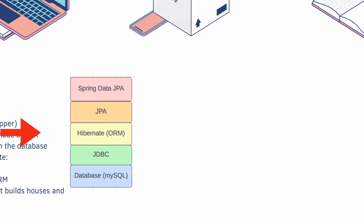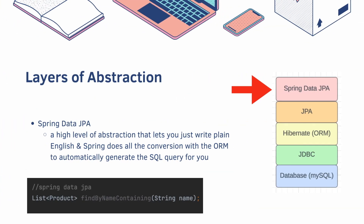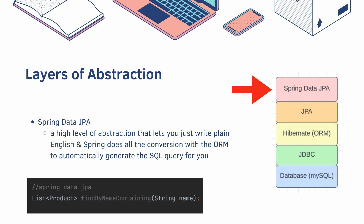At the top we have Spring Data JPA, which we covered in the previous video. This is a high level of abstraction that lets you write plain English, and then Spring does all of the conversion with the ORM to automatically generate the SQL query for you. You don't have to be an expert on this stack, but you should know the terminology used when referencing it.